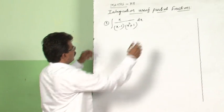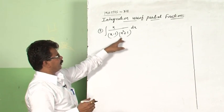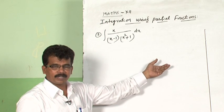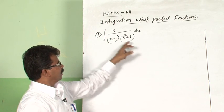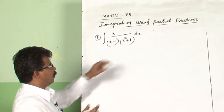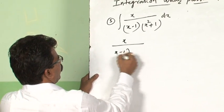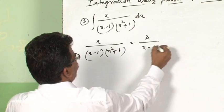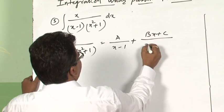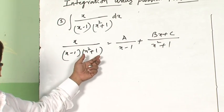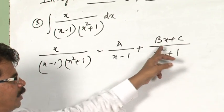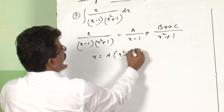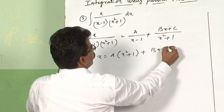Now let us see one more example of the third type. The question is integral of x divided by (x minus 1)(x² plus 1). If you had x² minus 1, you could have written it as (x+1)(x-1) and applied the first two methods. But here x² plus 1 cannot be factorized. Therefore, x divided by (x minus 1)(x² plus 1) can be written in partial fractions as A/(x minus 1) plus (Bx plus C)/(x² plus 1). That is: x equals A(x² plus 1) plus (Bx plus C)(x minus 1).